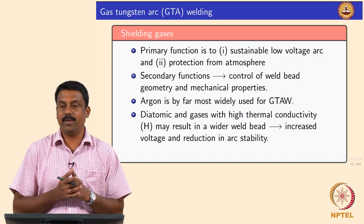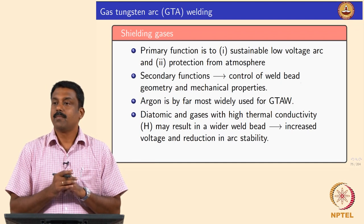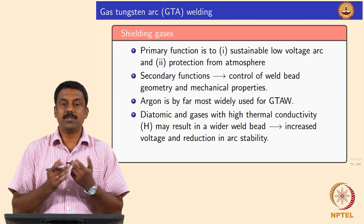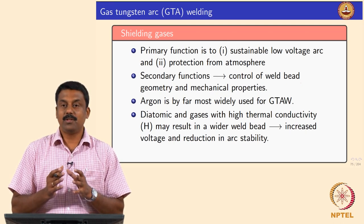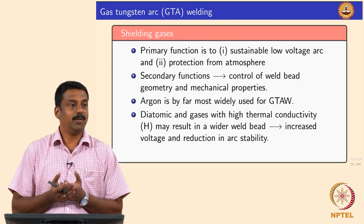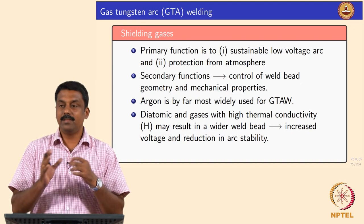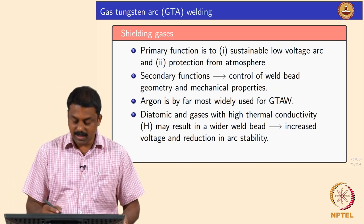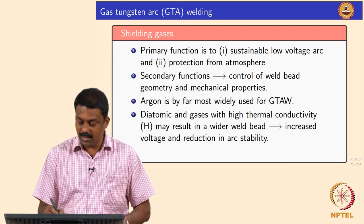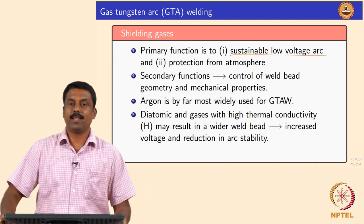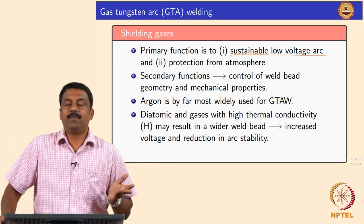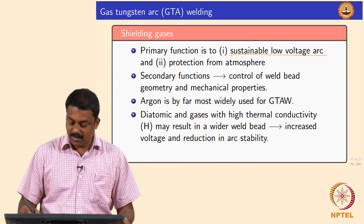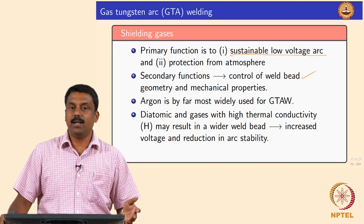It of course protects the atmosphere, but it will also change the weld bead geometry, it can also change the microstructure, it can also change the fluid flow. So all these things should be taken into consideration when choosing a shielding gas. The primary function is to sustain a low voltage arc and then protect it from the atmosphere. But secondarily, the arc can also influence the bead geometry and mechanical properties.